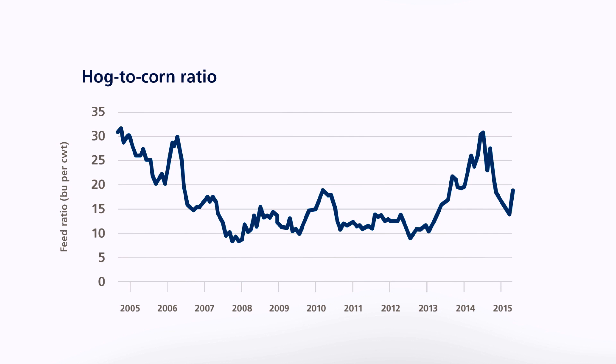Profitability reached a peak in 2014, but more recently both prices and profit margins have reverted to more normal levels. You can use the hog-to-corn ratio to project the likely direction of future profitability. Hog and corn contracts are sold on futures markets, so the ratio of their prices can be used as a projection of tightening or growing profit margins. The important point to remember: the livestock-to-feed ratio is a great tool to understand producer profitability.